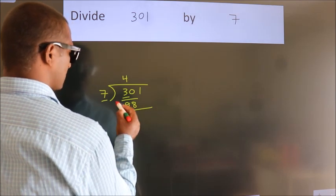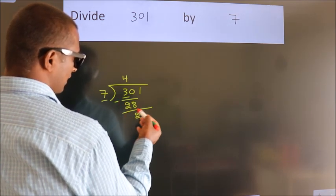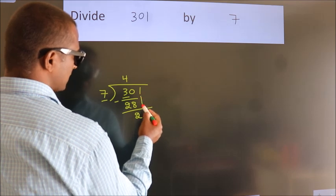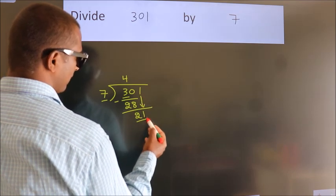Now we should subtract. We get 2. After this, bring down the beside number, so 1 down, making 21.